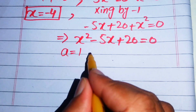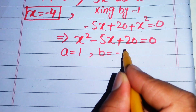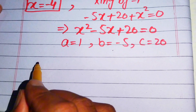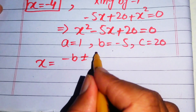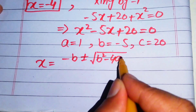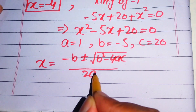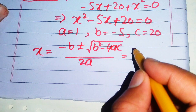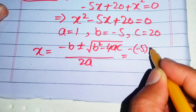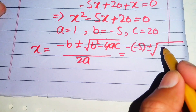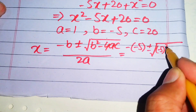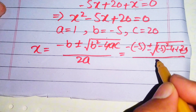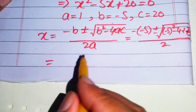We identify the coefficients: a equals 1, b equals minus 5, and c equals 20. The quadratic formula is x equals minus b plus or minus square root of b squared minus 4ac, divided by 2a. Substituting the values, we get x equals minus of minus 5, plus or minus square root of minus 5 squared minus 4 times 1 times 20, all divided by 2.